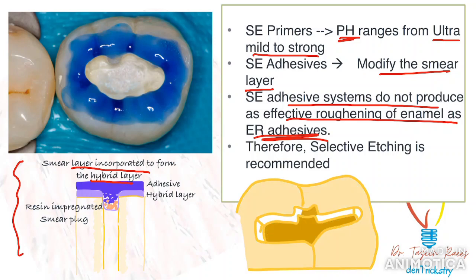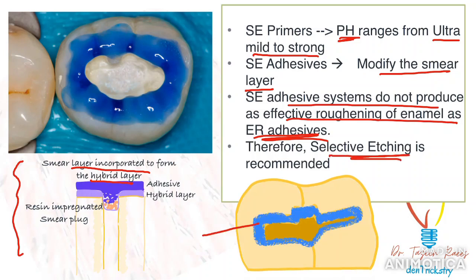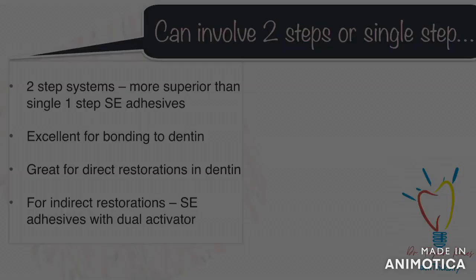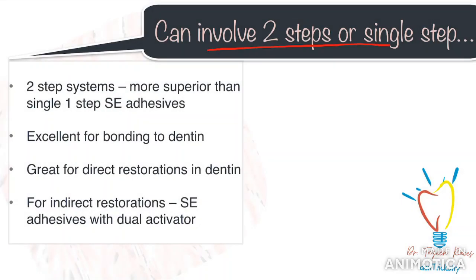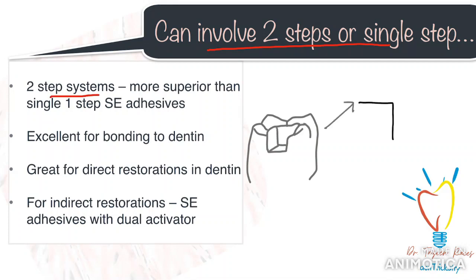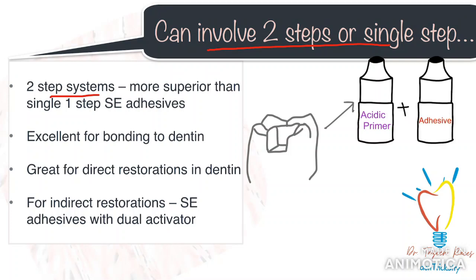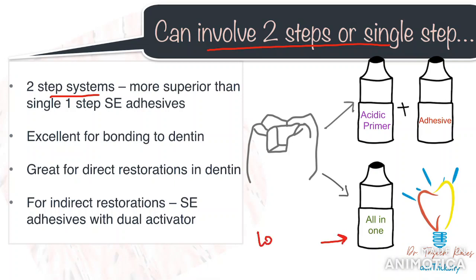One drawback of self-etched adhesive is that it does not produce as effective roughening of the enamel as etch and rinse adhesives. For this reason, it is recommended to acid etch the enamel selectively to increase its bond strength when using self-etched adhesive systems. Self-etched systems can be either single-step adhesives or two-step adhesives. The two-step system consists of two separate components: the first bottle containing primer and acid, and the second bottle containing hydrophobic bonding resin. The single-step contains all components in one bottle, but although it reduces the hassle of application, it is known to have lower clinical success. So the better option is to go with the two-step adhesives.